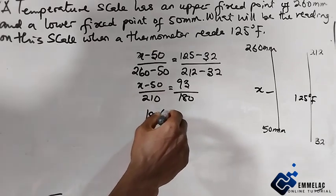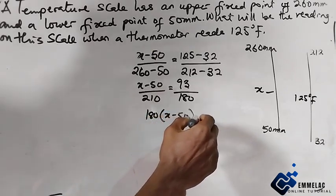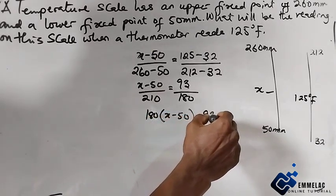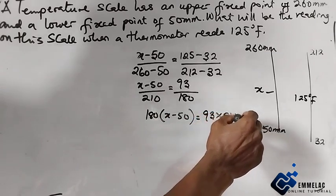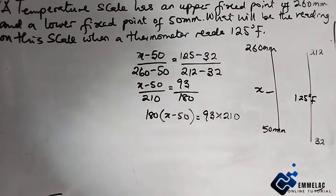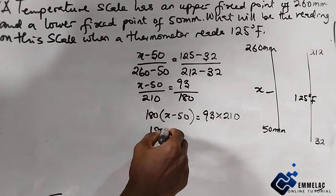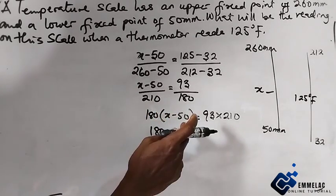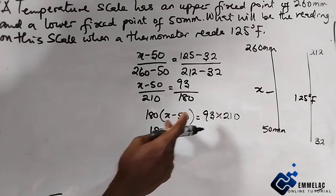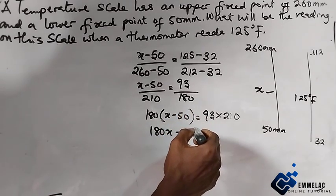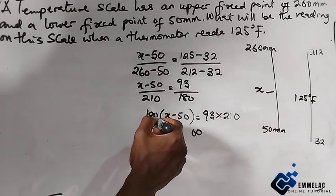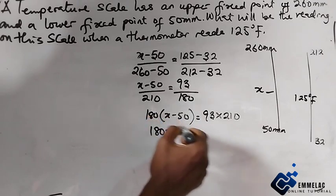Opening the bracket here, we have 180x minus 180 times 50, which is 9000.